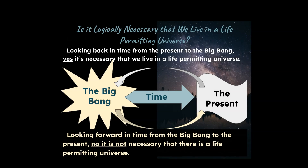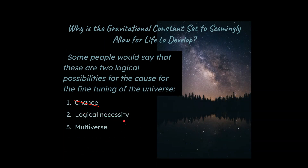Let's apply this to what I talked about previously. It is true that if we consider the question from the present — must there have been a universe that allows for intelligent life to exist? — the answer is yes. But that's not the question I want to ask. I'm asking about the Big Bang and the way the universe was set up originally. If we start from there, does there have to be a universe that allows for intelligent life to exist? The answer is no. There is no logical necessity-based reason why the universe has to exist in such a way as to allow for intelligent life. If we consider from the beginning of the universe, from the Big Bang itself, it is not logically necessary for a life-permitting universe to exist. So this second explanation does not hold up.